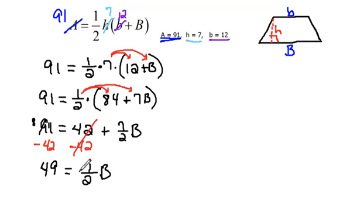And then to get b alone, we would have to divide by 7 halves. Or another way to think about that would be multiplying by 2 over 7. So that everything would cancel. And over here on the left, 7 would go into 49, 7 times. And 2 times 7 would be 14 equals b.